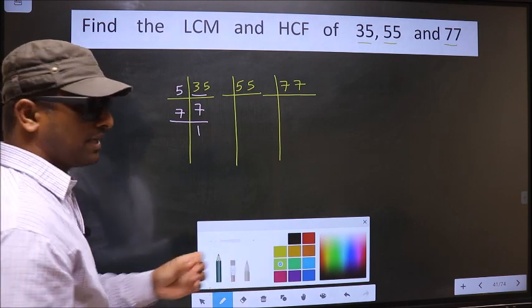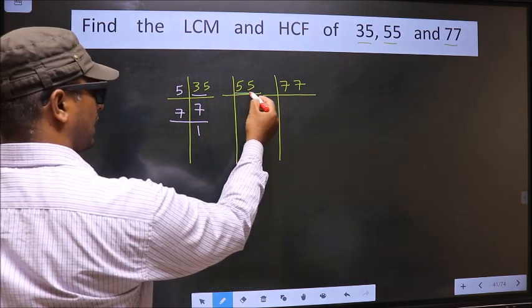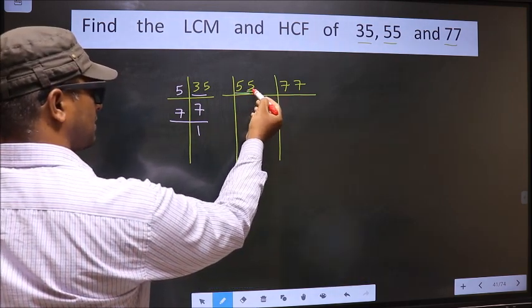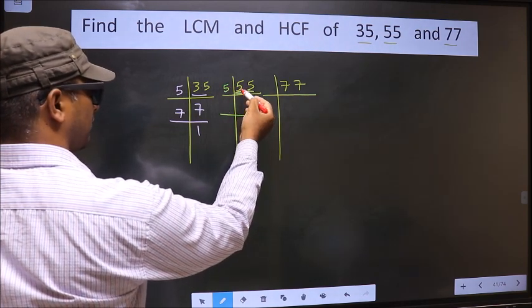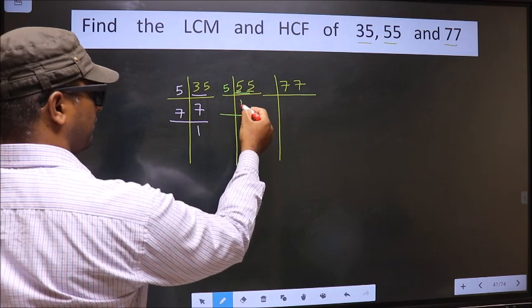Now the other number, 55. Last digit is 5, so we take 5 here. The first number 5—when do we get 5 in the 5 table? 5 times 1 equals 5.